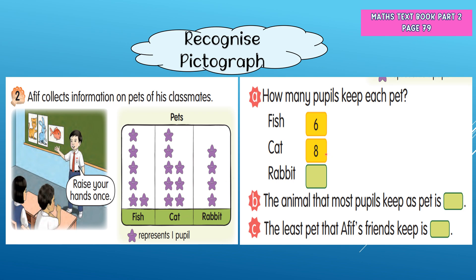How many pupils keep each pet? Fish: six pupils. Cat: eight pupils. Rabbit: four pupils — one, two, three, four. The animal that most pupils keep as a pet is cat, and the least favorite pet that Aviv's friends keep is rabbit.